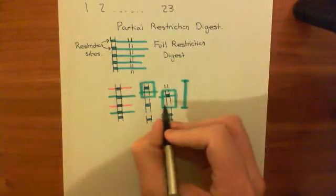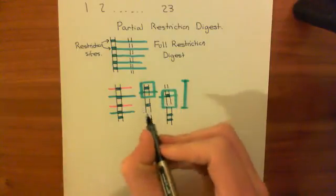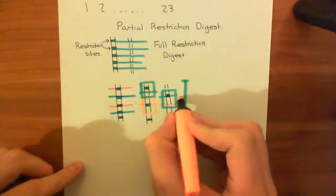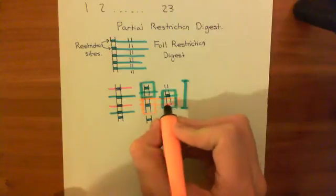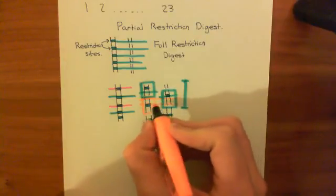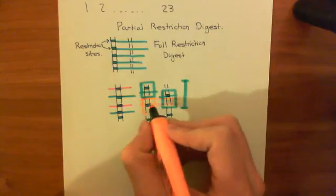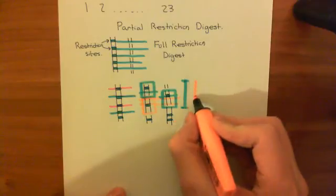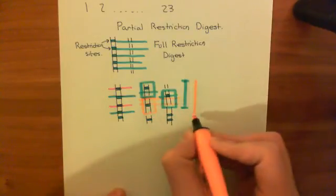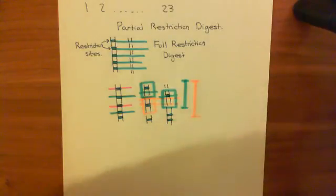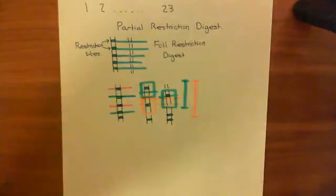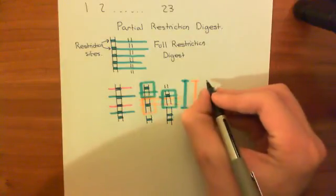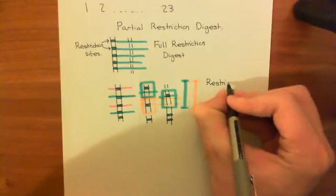By combining the sequences of overlapping fragments, you extend your known sequence further and further. The same principle applies across all your fragments — you identify overlaps, join the sequences, and build up the whole sequence for chromosome 1. This concept of putting the different fragments together using their overlapping sequences is known as restriction mapping.